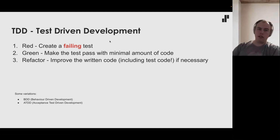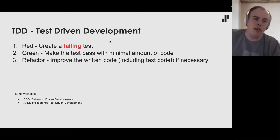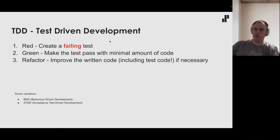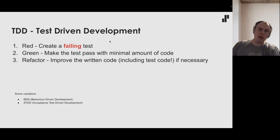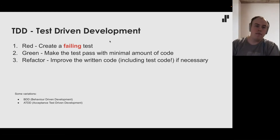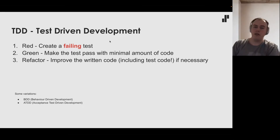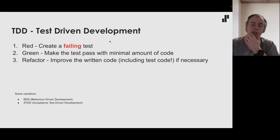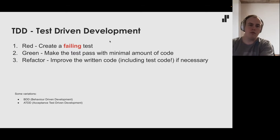TDD means test-driven development. It practically has three steps. The first step is red — red and green refer to the colors your IDE gives when running tests. If they fail, they are red; if they pass, they are green. So the first step is red: create a failing test. You start creating the test before you have any production code. The important part is the failing, because if your test doesn't fail, you can't be certain it's testing the correct thing.